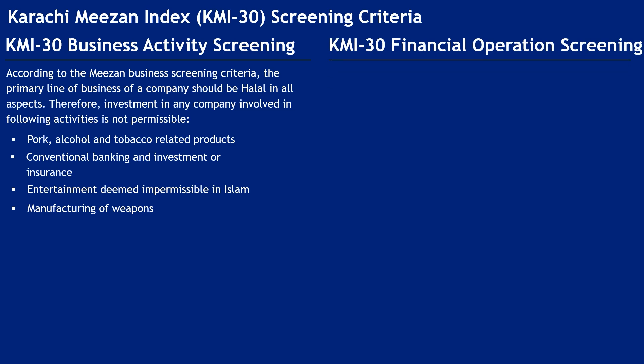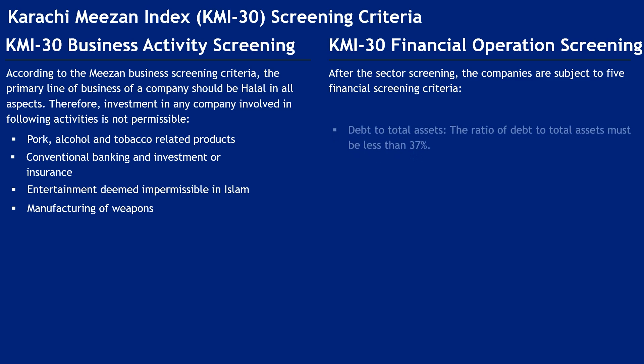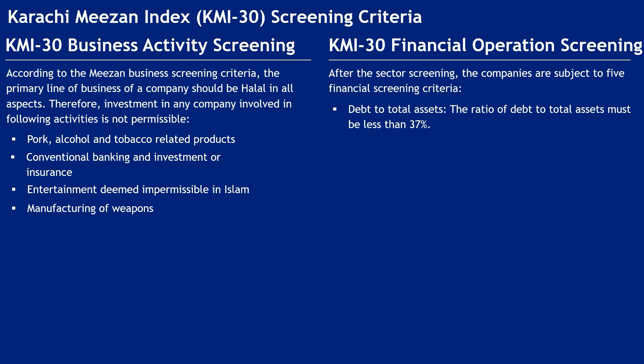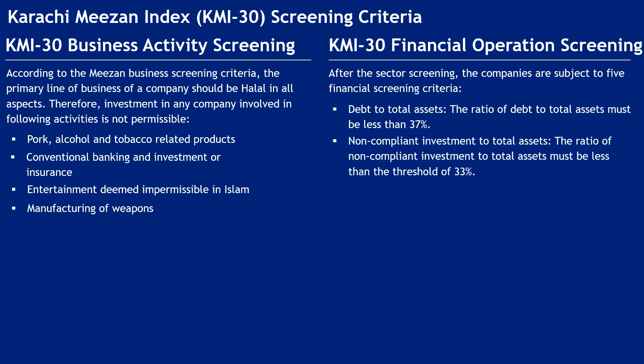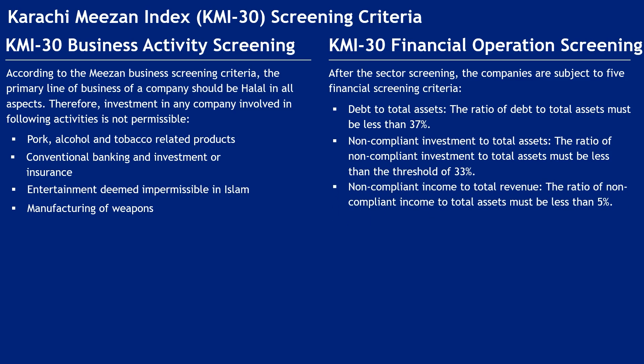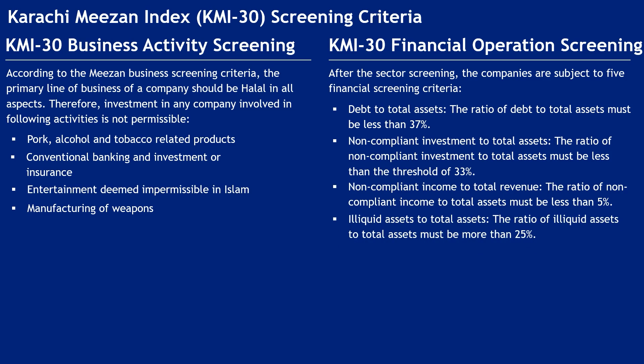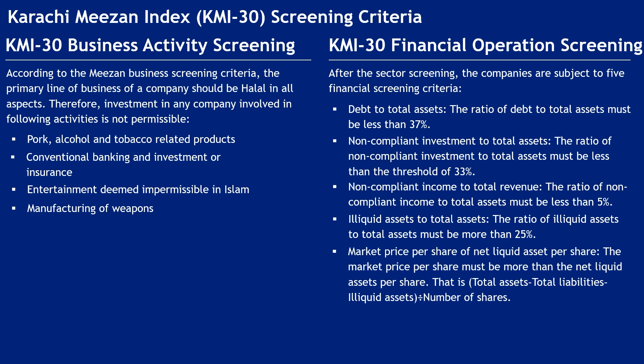KMI-30 Financial Operations Screening. After sector screening, companies are subject to five financial screening criteria. Debt to total assets must be less than 37%. Non-compliant investment to total assets must be less than 33%. Non-compliant income to total revenue must be less than 5%. Illiquid assets to total assets must be more than 25%. The market price per share must be more than the net liquid assets per share, calculated as: (total assets − total liabilities − illiquid assets) divided by number of shares.